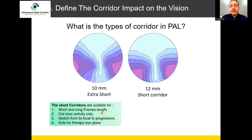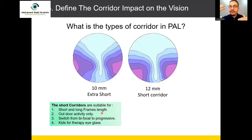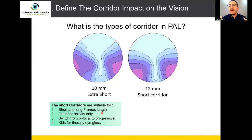Short corridor is also very suitable for people who have outdoor activity only — most of their time they are looking at far distance and near distance, not intermediate. People who focus on far and near only and don't spend much time at a desktop or at intermediate distance — for them, you select short corridor.